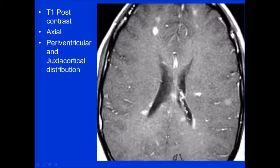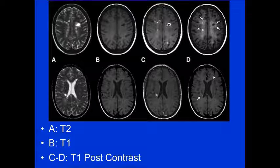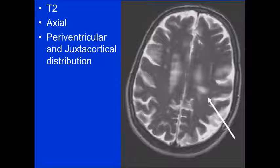On this case, image A is T2, B is T1, and C and D are post-contrast. On the D image in the upper right, in the left hemisphere, one lesion doesn't enhance — that's a remote lesion, a black hole. The other lesions are enhancing and represent active demyelination. Another axial T2 demonstrates lesions that are periventricular and juxtacortical.